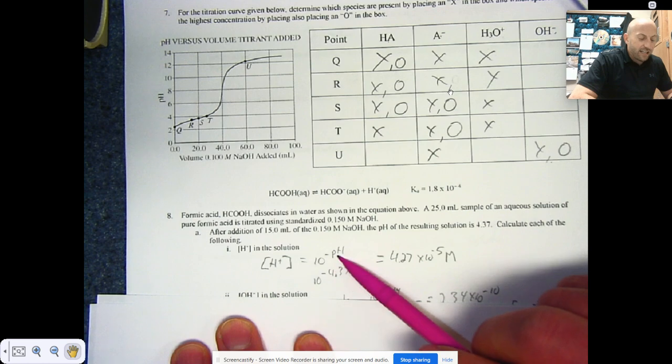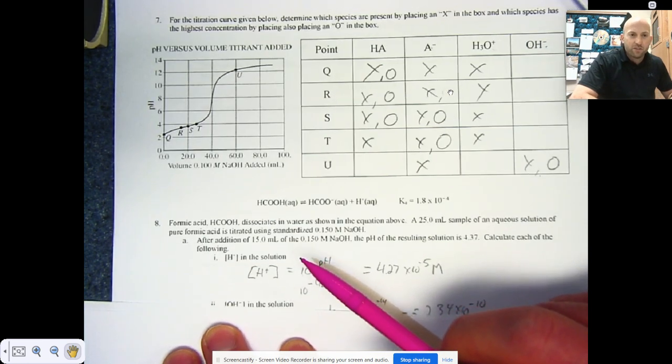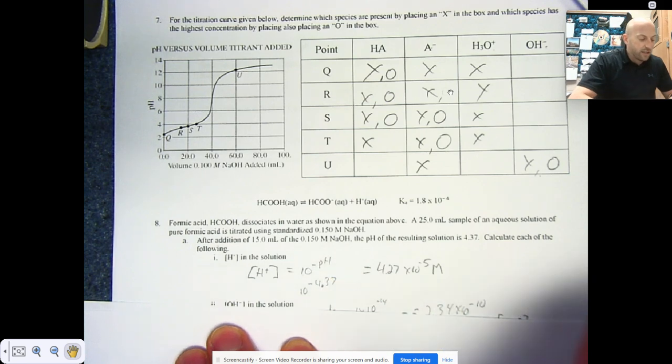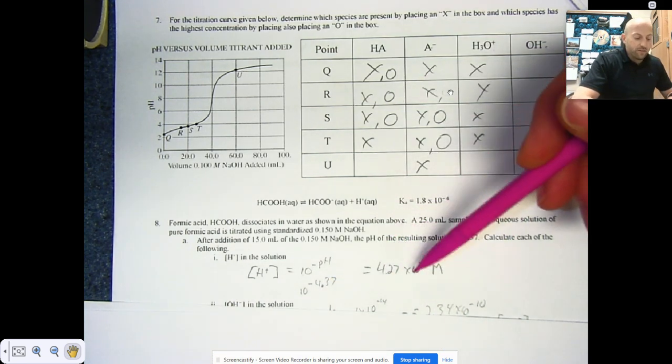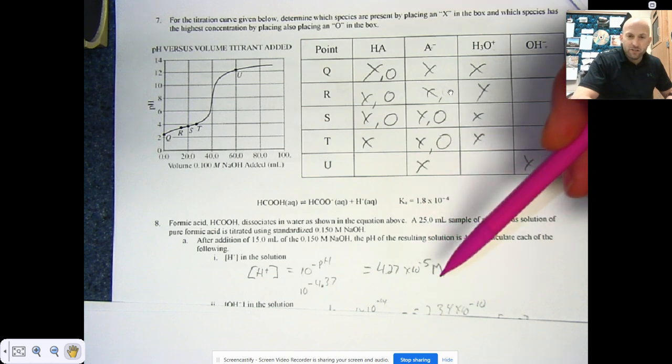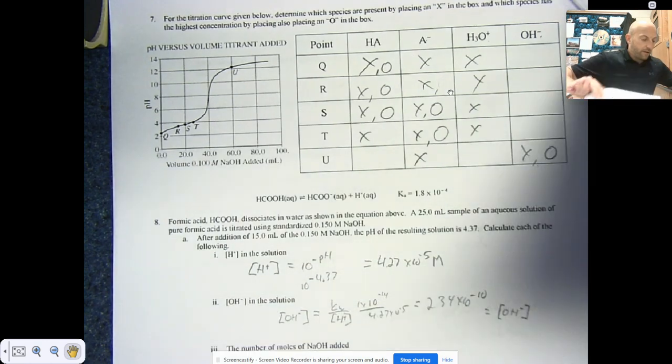So I'll get you started to kind of get you rolling. The concentration of hydrogen ions is going to be equal to 10 to the negative pH. Remember all of those things that we did in those first couple worksheets that showed these relationships. And then that gives you, this is your concentration, you can use that and some of the other ones. Remember its relationship to Kw and all of those.